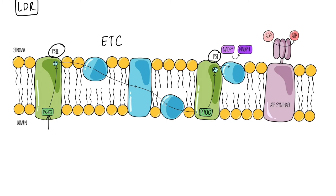The electron transport chain is made up of a series of electron carriers which transfer the electron along the membrane. As the electron moves along the electron transport chain, it loses energy — so it goes from a high-energy state to a low-energy state. That energy isn't lost; it's used by the electron carriers to pump protons from the stroma into the lumen of the thylakoid. So they have a dual function — they can act as electron carriers and proton pumps. Hydrogen ions move from the stroma and accumulate in the lumen, creating something called a proton gradient.